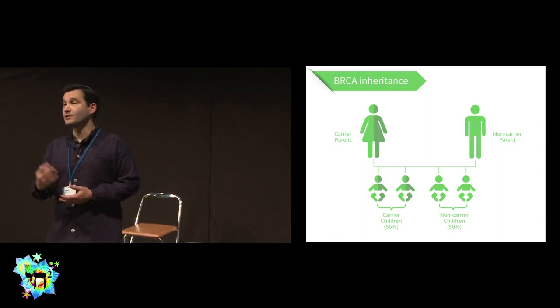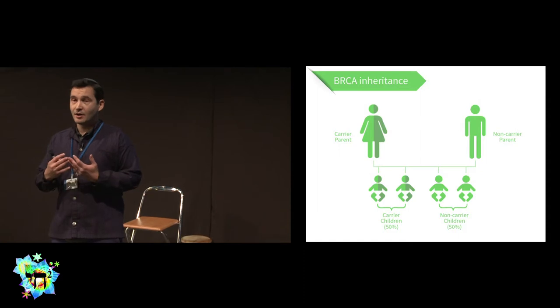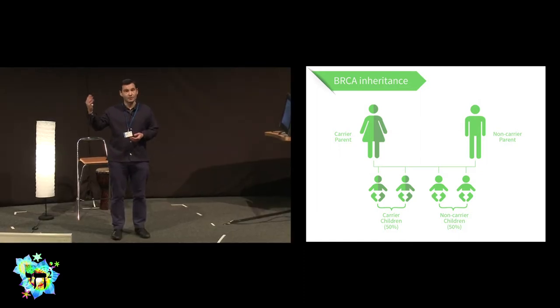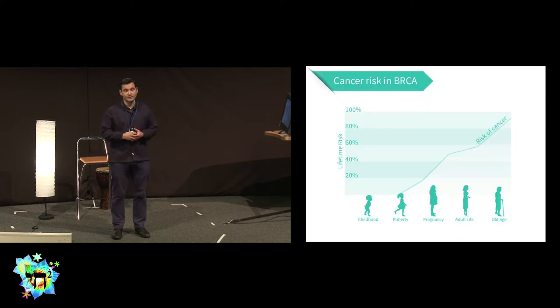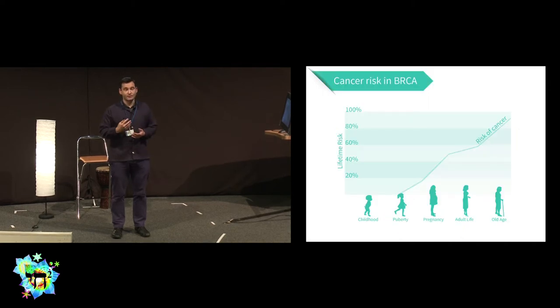The BRCA gene mutation is inherited in a dominant fashion, which means that if one of your parents has the mutation, you have about 50% chance of inheriting it from them.